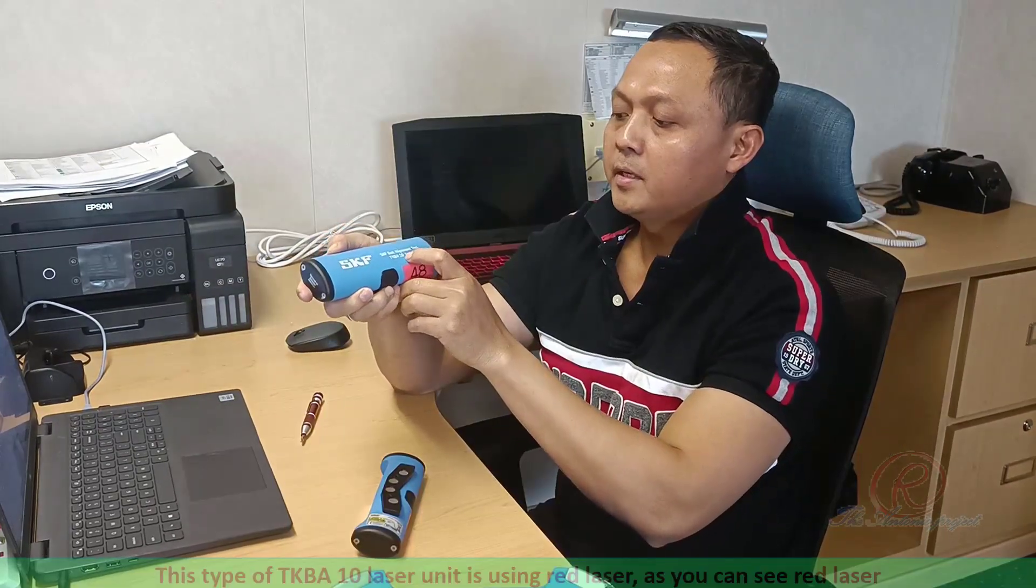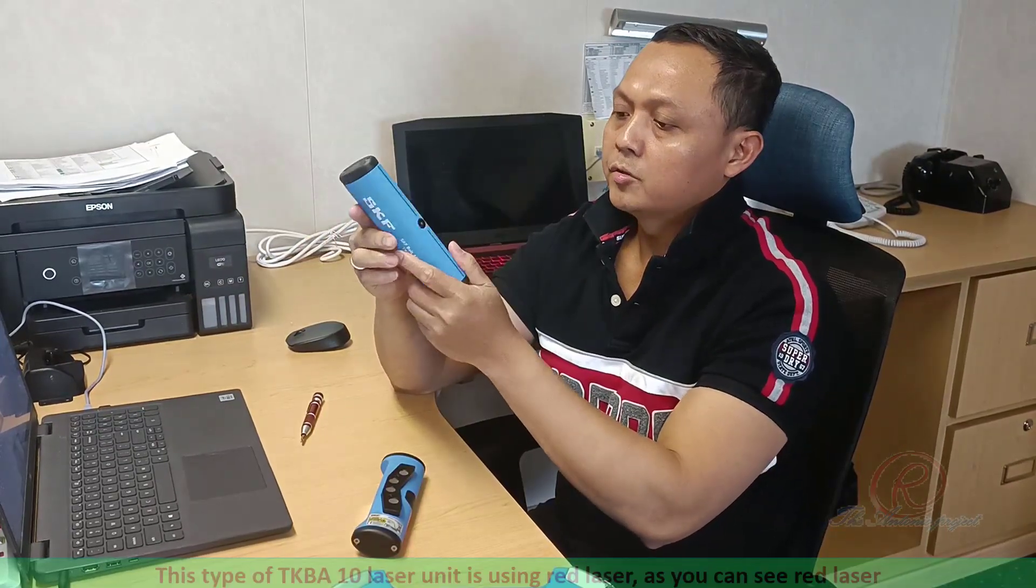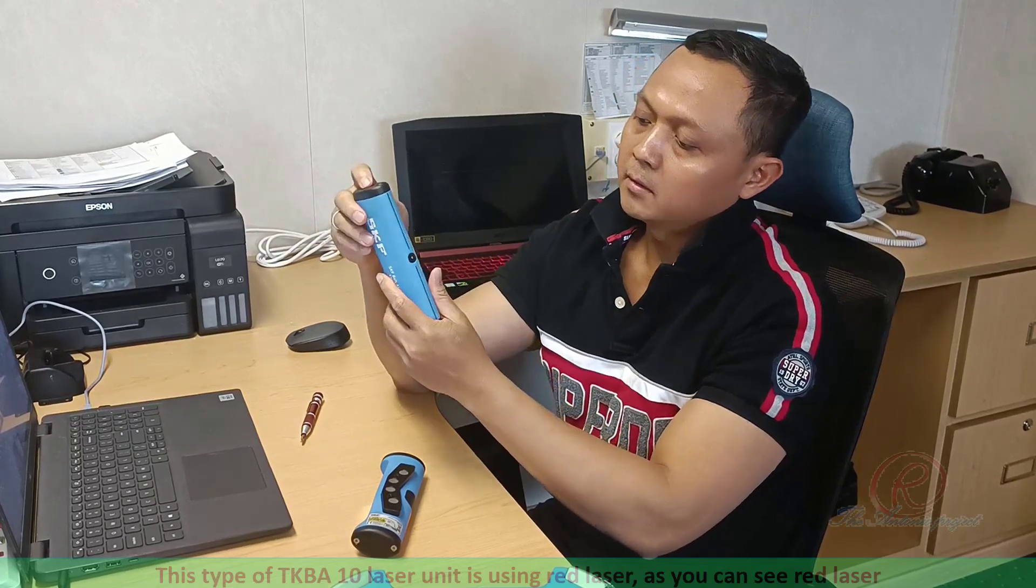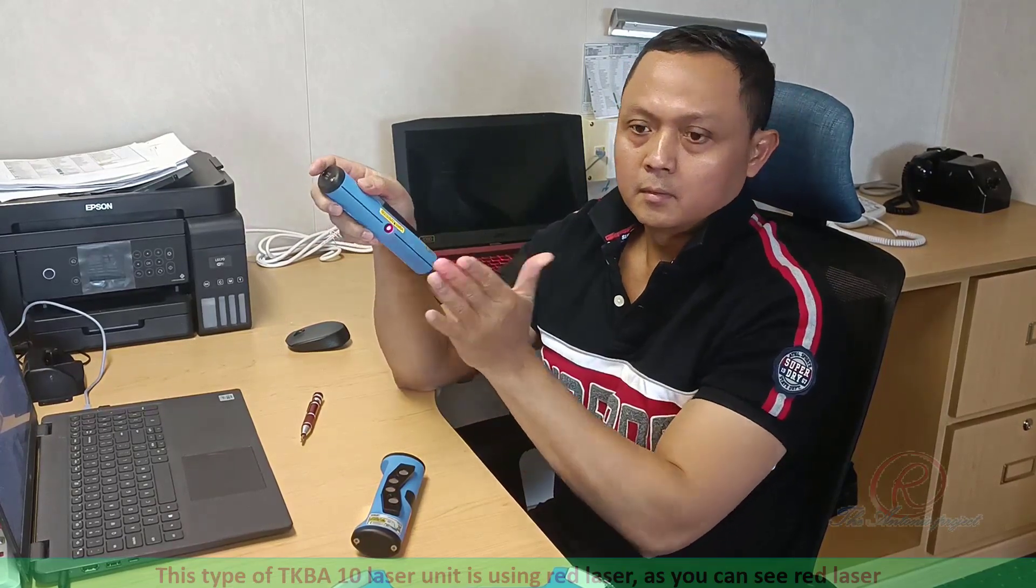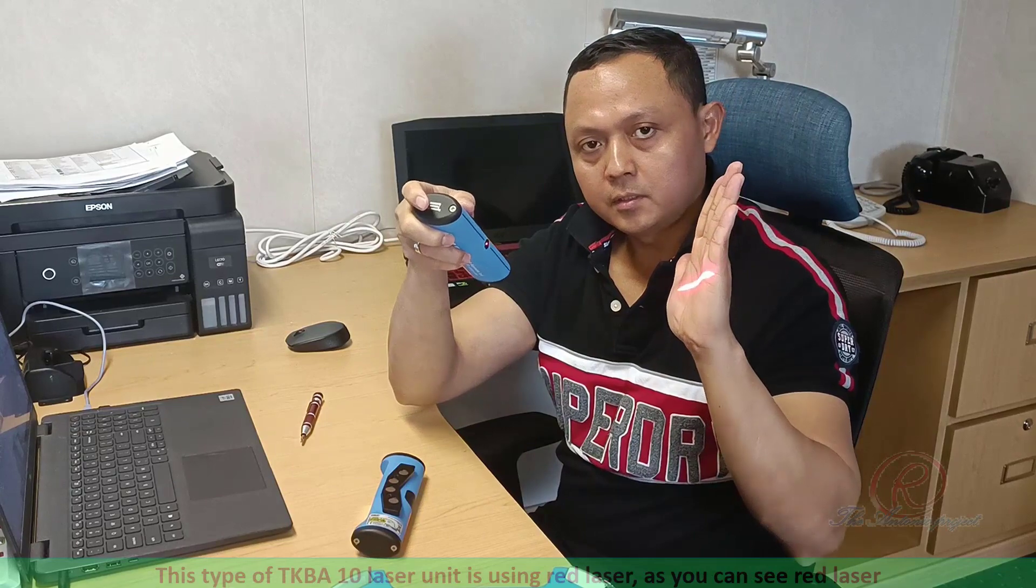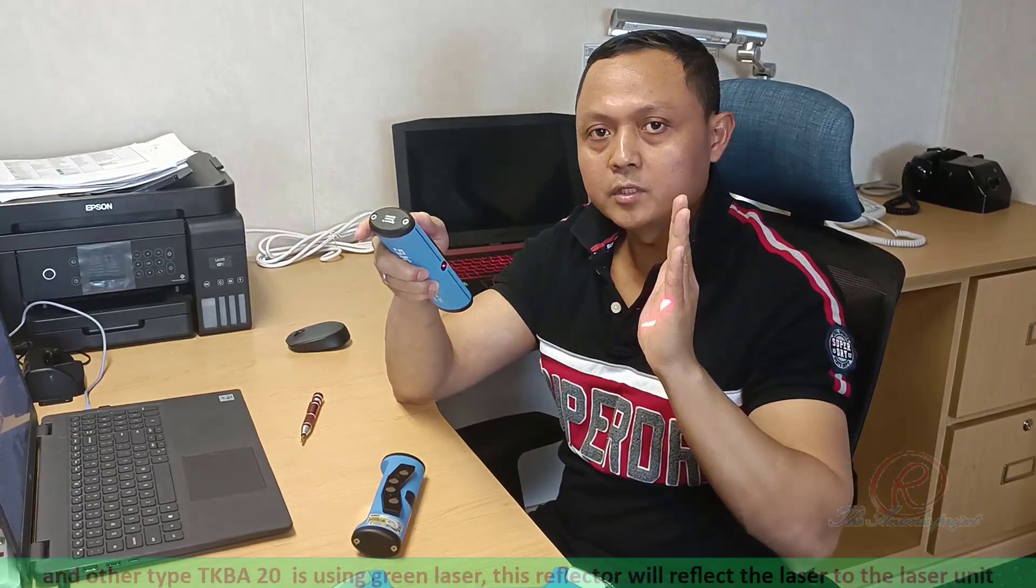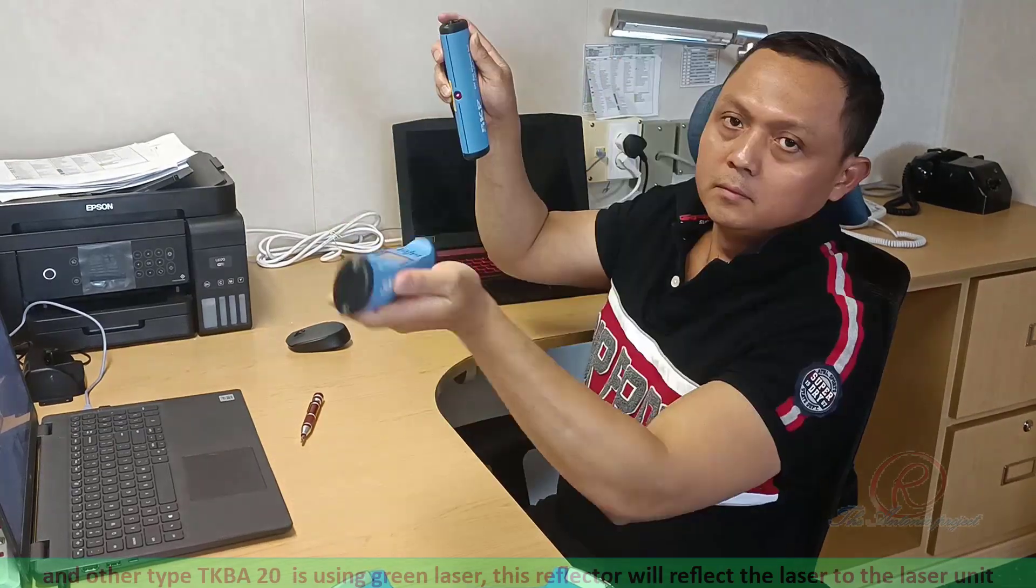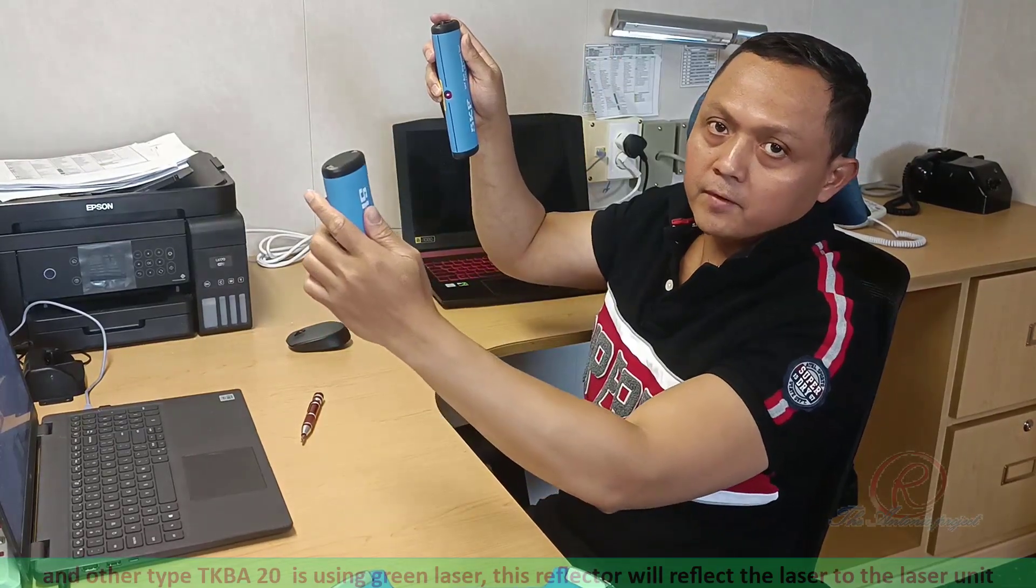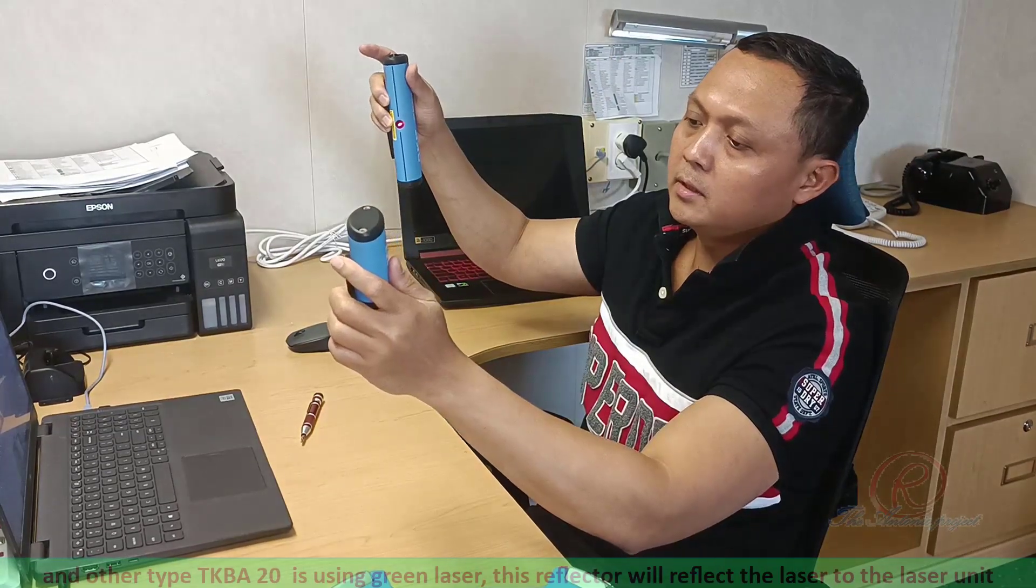This type of TGB E10 Lasers, this is using red laser, as you can see red laser, and other type TKGB 20 using green laser. This reflector will reflect the laser to the laser unit.